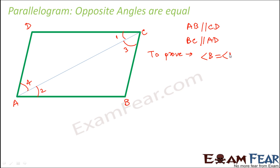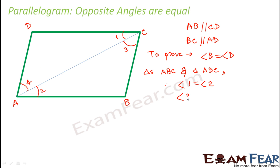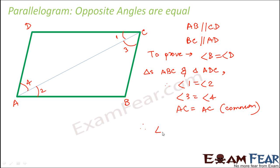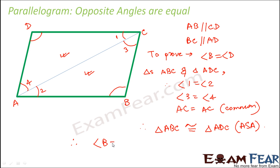We compare triangles ABC and triangle ADC. Since AB and CD are parallel to each other, angle 1 is equal to angle 2. Since BC and AD are parallel to each other, angle 3 is equal to angle 4, and AC is equal to AC which is a common side. Considering these three parameters, triangle ABC is congruent to triangle ADC by ASA congruency. Since the two triangles are congruent, their corresponding angles are also equal, therefore angle B is equal to angle D.